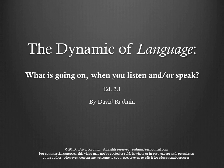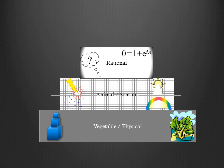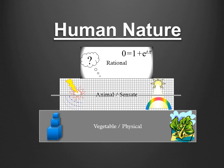The dynamics of language. What is going on when you listen or speak? Here we have the three layers of human nature, as described by Plato and Aristotle, and even older traditions, such as the six days of creation in Genesis, which is modeled on the same three-layer model.